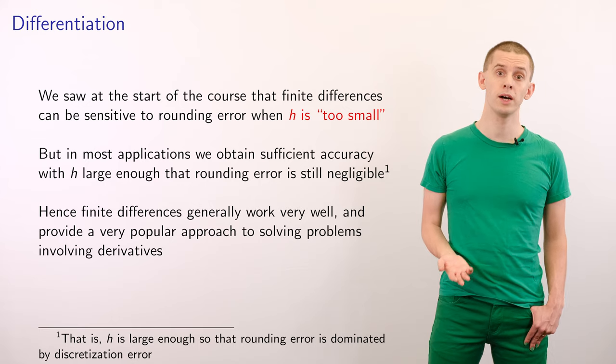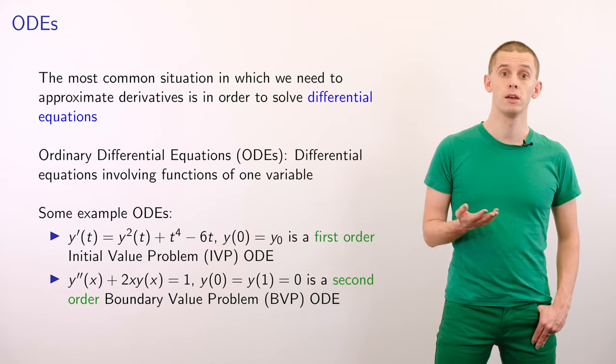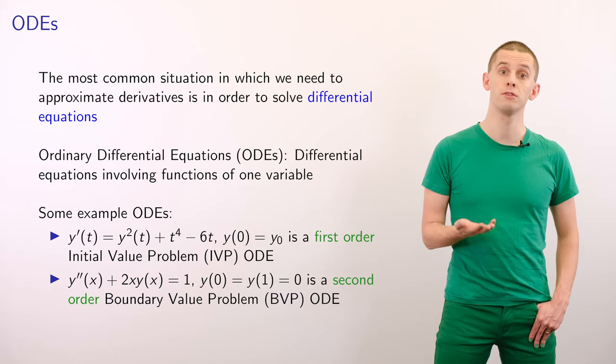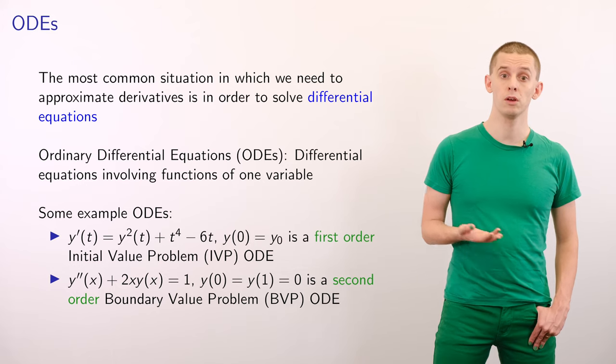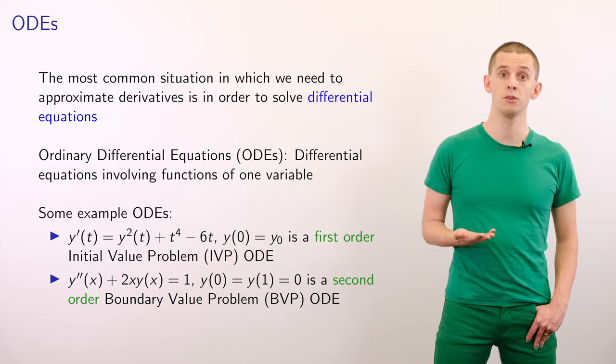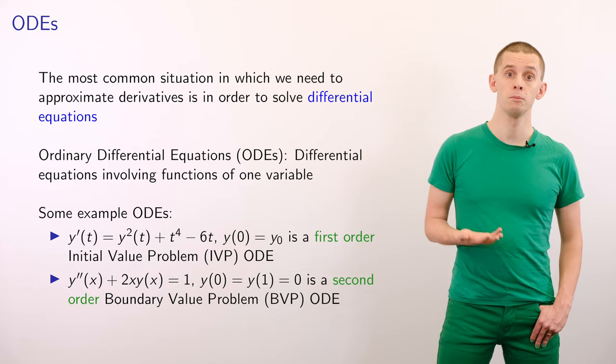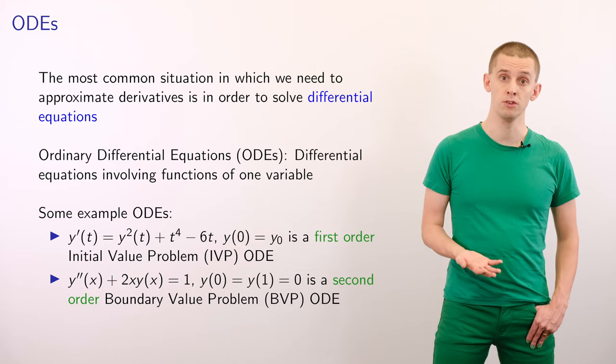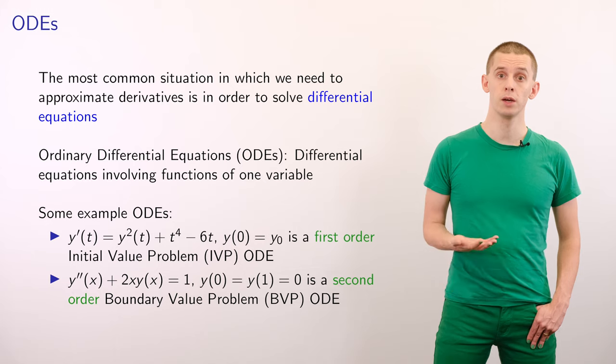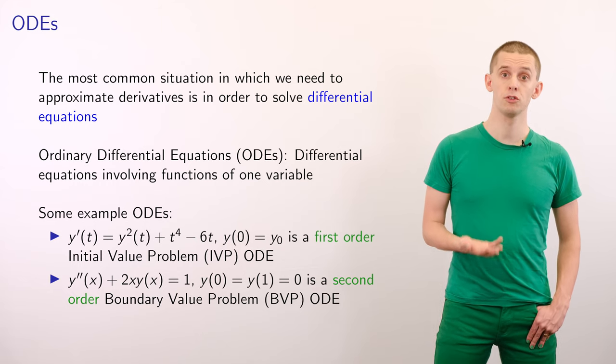The most common situation in which we need to approximate derivatives is to solve differential equations. We'll first talk about ordinary differential equations, or ODEs, that are differential equations involving functions of one variable. Let's take a look at a few examples. First, we could look at the equation y'(t) = y² + t⁴ - 6t with some condition that y(0) = y₀. This would be an example of a first order differential equation because the maximum derivative that appears in the equation is y' of order 1. This would be an initial value problem, or IVP, because we're given data at t=0, and we could therefore use the differential equation to solve for t greater than 0.